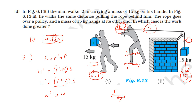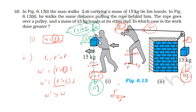In the first case, the 15 kg mass acts downward due to gravity, while displacement is horizontal, so the angle between force and displacement is 90 degrees. Work done equals force into displacement into cosine 90 degrees, which is zero. In the second case, the tension force acts in the direction of displacement, so work done is more. Therefore, work done in the second case is greater than in the first case.